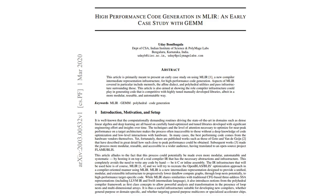In this video, I'm going to go through this 2020 paper called High-Performance Co-Generation in MLIR that covers the GEMM example. GEMM stands for General Matrix Multiplication, and basically shows how using a high-level operator for representing matrix multiplication and a set of transform passes with some parameters, you can get to near-optimal performance. This gives you the advantage of readability, maintainability, and portability.